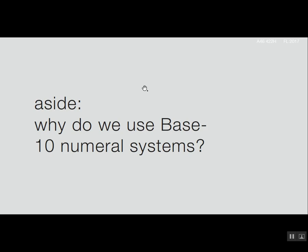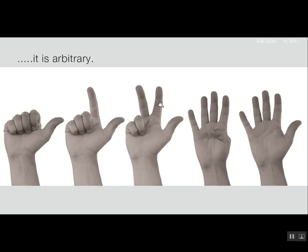Binary is what's known as base 2. Do you guys know why we use base 10? The reason why we use base 10 is completely arbitrary — it's just a random coincidence, the fact that we have 10 fingers. If we had 14 fingers, we'd be counting in base 14. This is what's going to make communicating with aliens, with their 16 fingers and 100 tentacles, really confusing — because they're going to be counting and doing math in a completely different system from us.